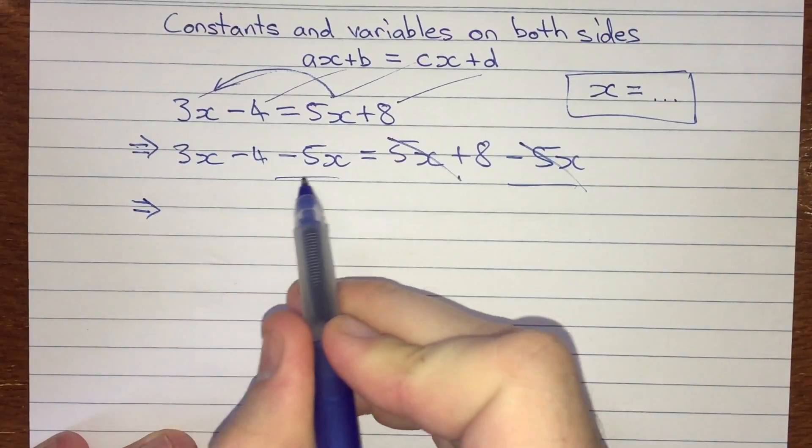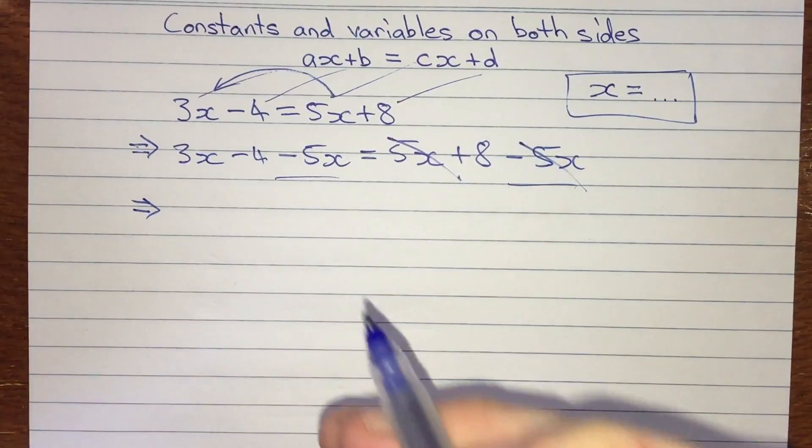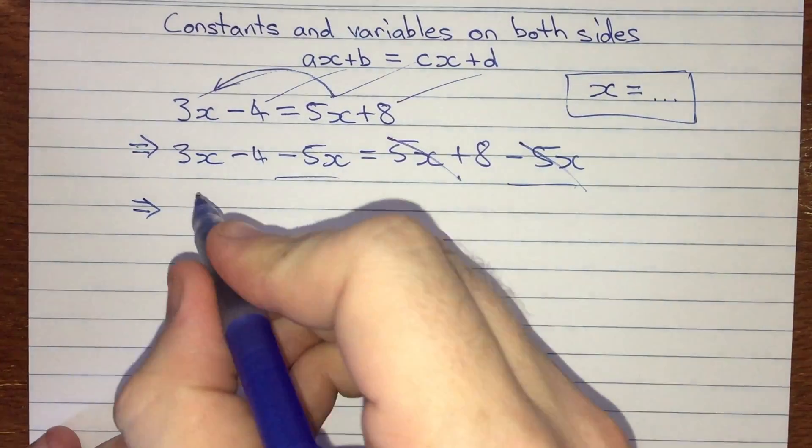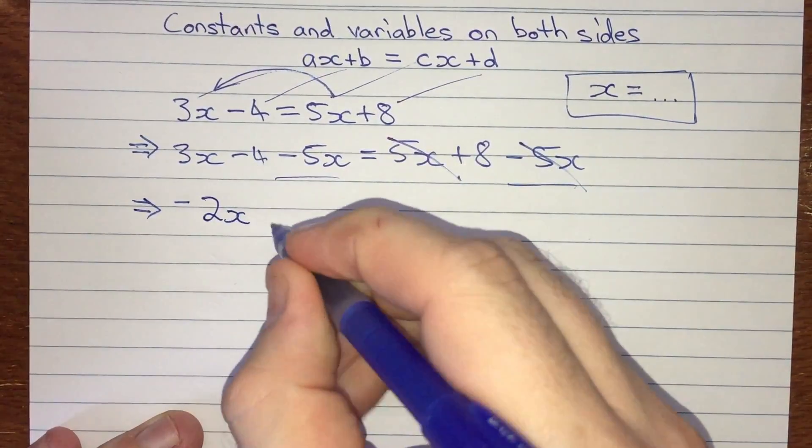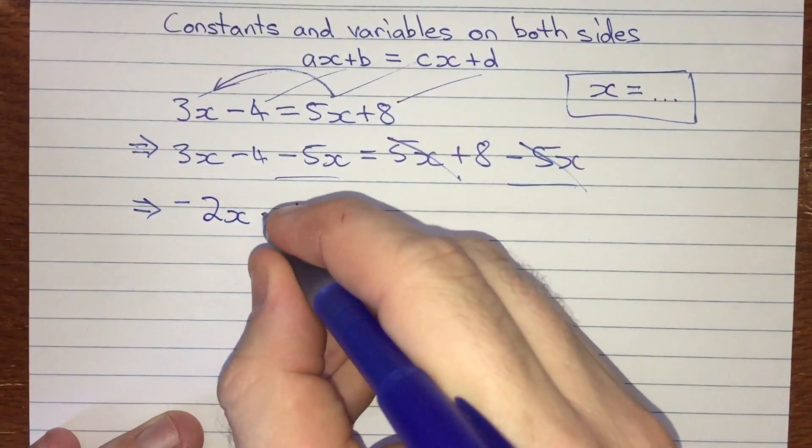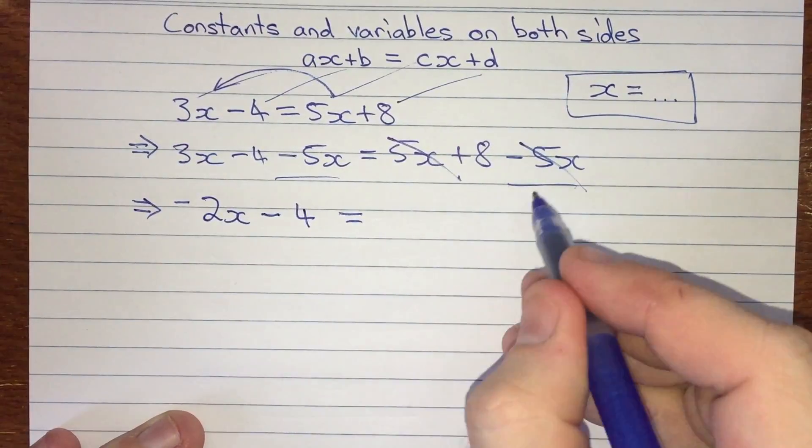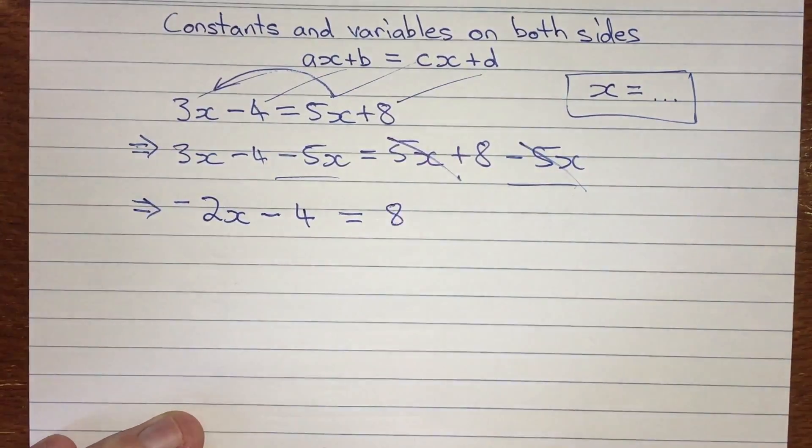So moving down, I've now got 3x and minus 5x. I can combine those because they're sort of like terms. So 3x minus 5x leaves me with minus 2x. I've still got that minus 4 there I'll have to deal with in a minute. And on the other side, those have gone away, and I'm just left with the 8.